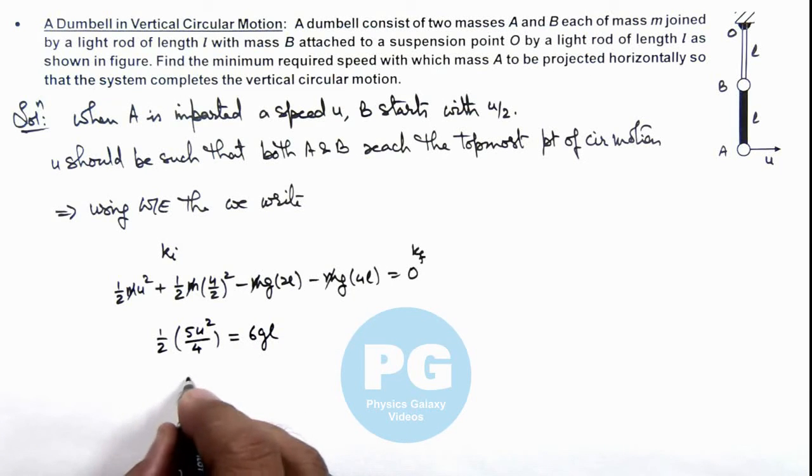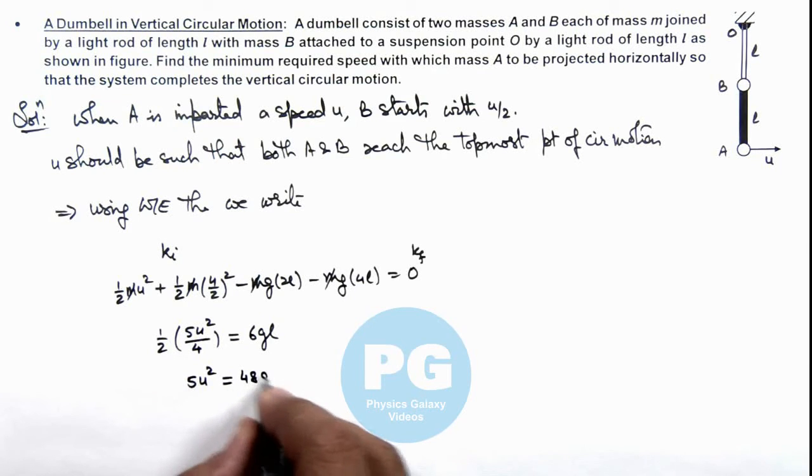So this gives us 5u² is equal to 6 multiplied by 8, it is 48gl.